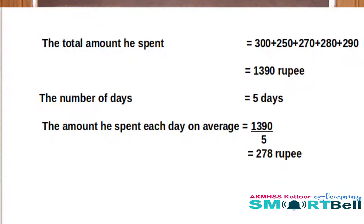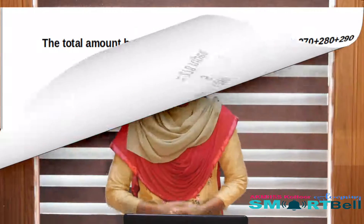How do we compute this? It is simple. How much did he spend in all? 300 plus 250 plus 270 plus 280 plus 290 — that means 1390 rupees. And in how many days? 5 days. So the amount spent each day on average equals 1390 divided by 5, that is 278 rupees. So all the problems of Manikutan were solved.